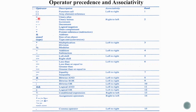The third priority is the arithmetic family: star, slash, modulo (multiplication/division/modulus) — left to right. Then plus and minus (addition and subtraction) — also left to right. Next is shifting: left shift and right shift. Then relational operators: less than, less than or equal to, greater than, greater than or equal to. Then equality operators: equal to equal to, not equal to. Then bitwise operators: bitwise AND, bitwise XOR, bitwise OR — in order of priority.